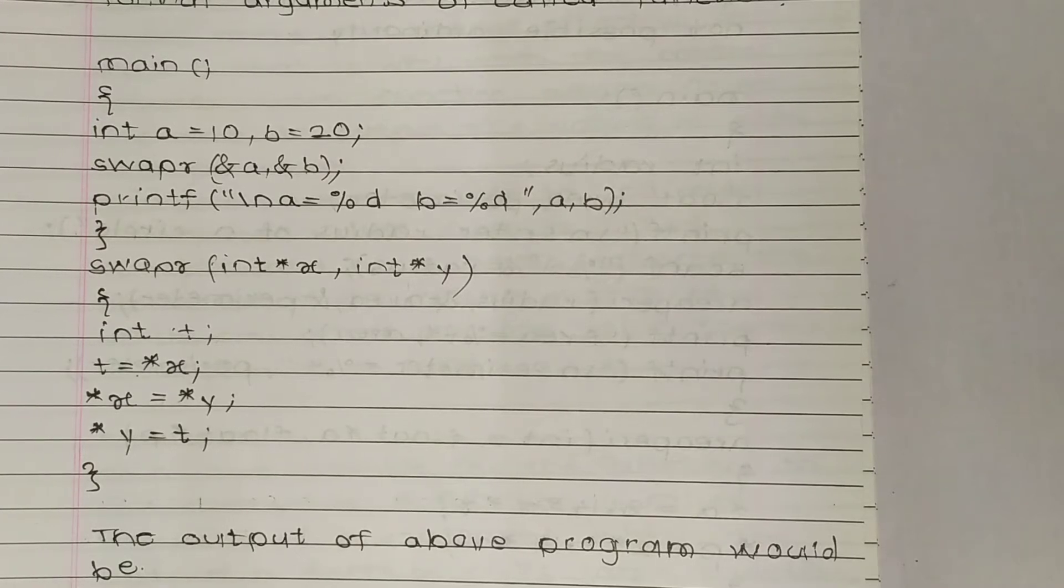This printf statement prints on the next line: a equals the value of a, and b equals the value of b.